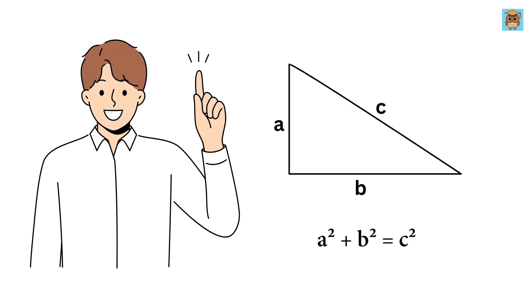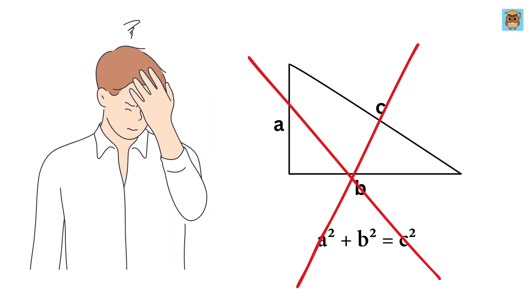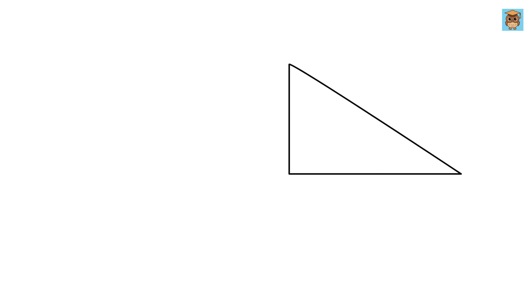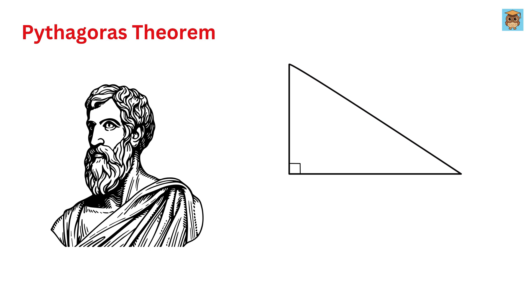This underrated theorem I am about to show will make you forget Pythagoras' theorem. Imagine you have a triangle where one angle is exactly 90 degrees. In such a right triangle, there is a famous and beloved theorem which we all know is called Pythagoras' theorem.